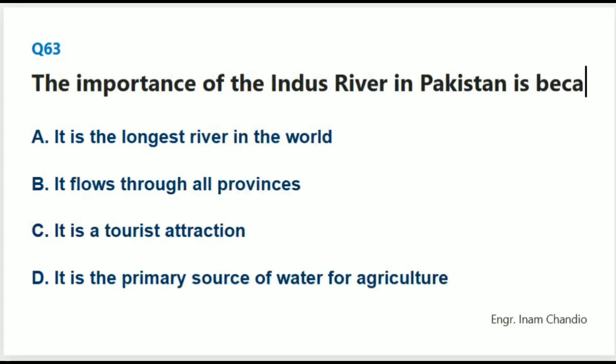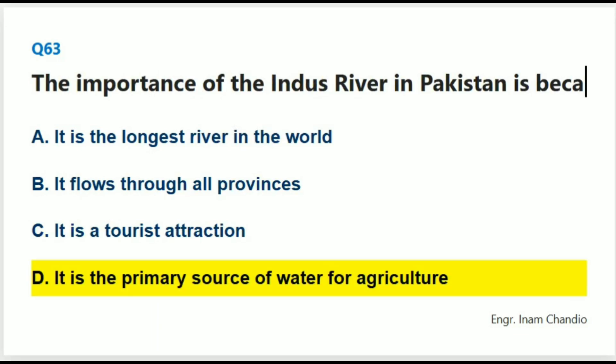The importance of the Indus River in Pakistan is because: The correct answer is D. It is the primary source of water for agriculture.